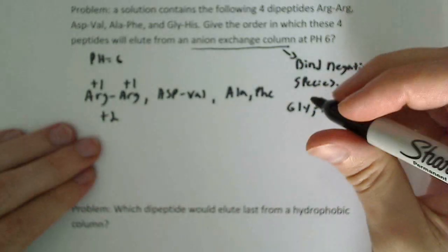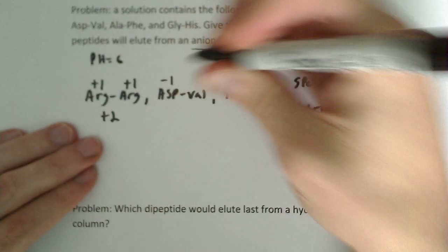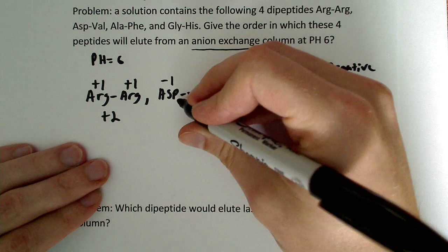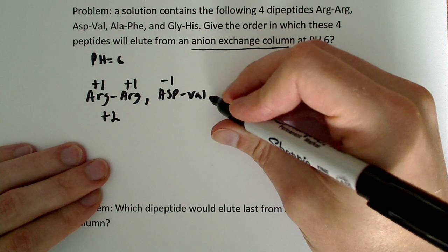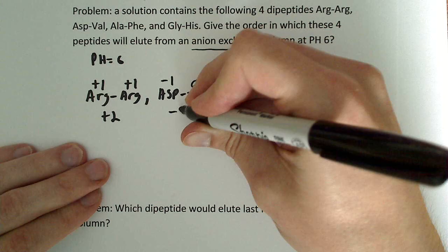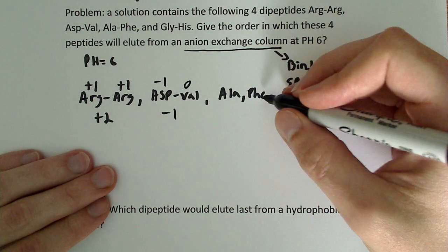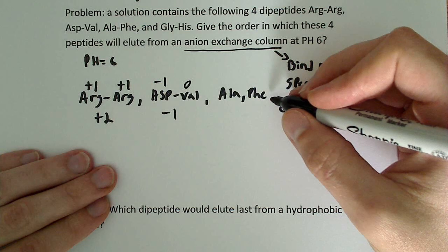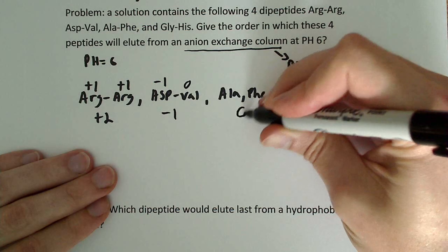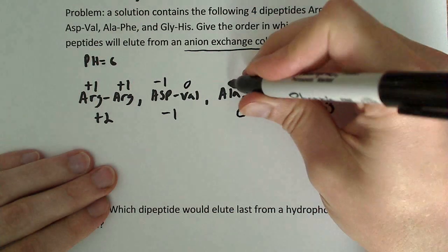Now aspartic acid and valine: aspartic acid has a minus 1 charge because it loses a proton at 3.9, and valine has no charge, so this overall charge is minus 1. Alanine and phenylalanine, they are both non-polar hydrophobic amino acids, so they're going to have a charge of 0 overall. Both of them are 0.